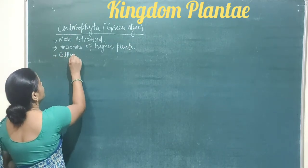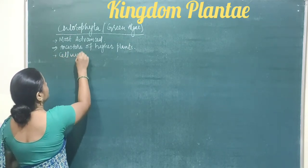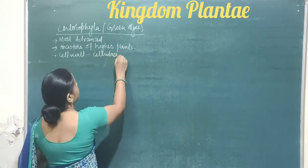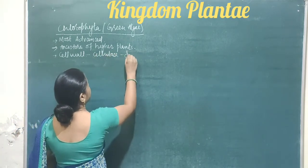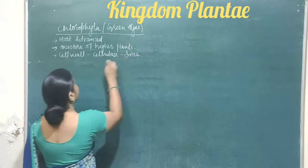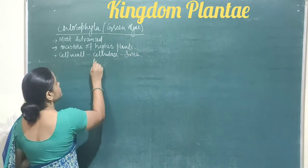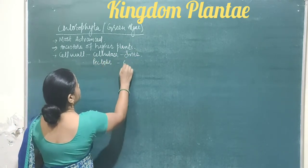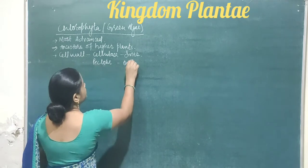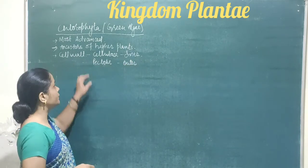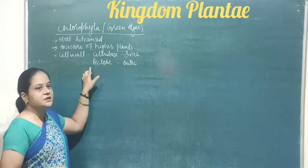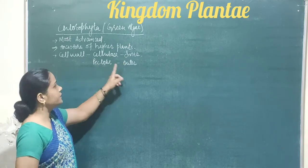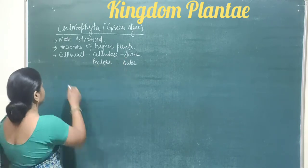The cell wall is composed of cellulose present in the inner layer and pectose present on the outer side. So there are two different components present in the cell wall: cellulose in the inner layer and pectose in the outer layer.